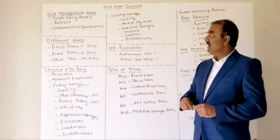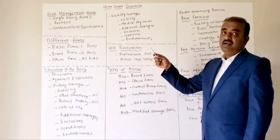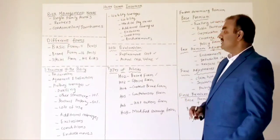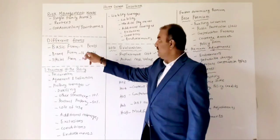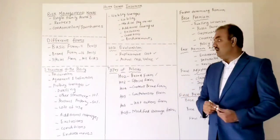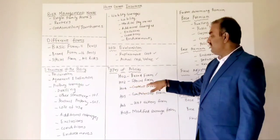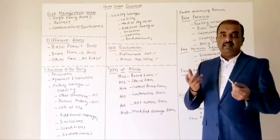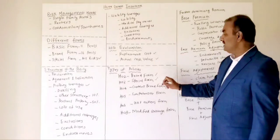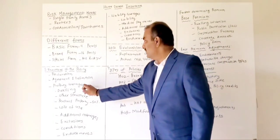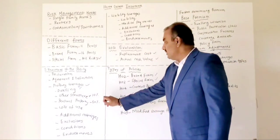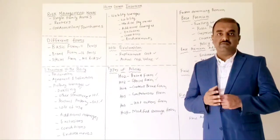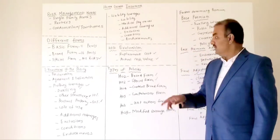Coming to the types of policies — insurance companies have different policy forms for single family homes, condominiums, and renters. HO2 is the broad form with 16 perils, covered on a replacement cost basis. HO3 is the special form — all-risk coverage — meaning anything that happens to your home, whether lightning or theft, is covered. However, in HO3 the building and other structures are covered under all-risk, but personal property is covered only for named perils — so only the listed perils are covered for personal property.